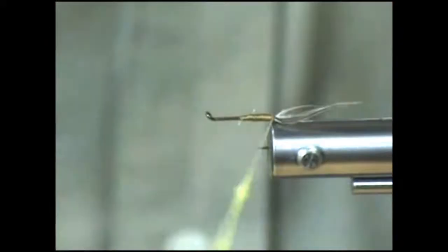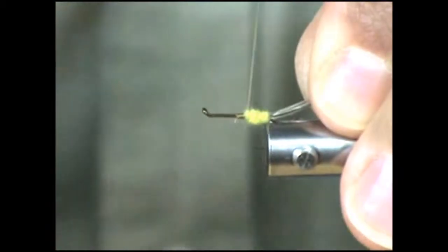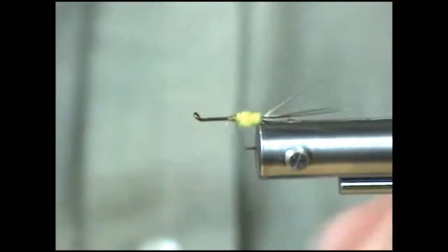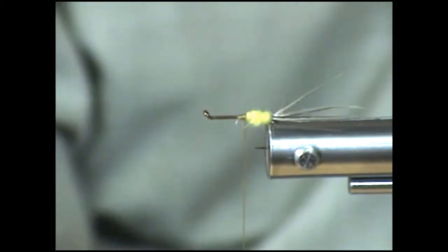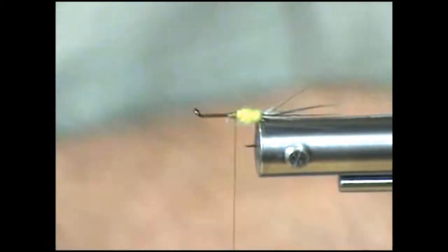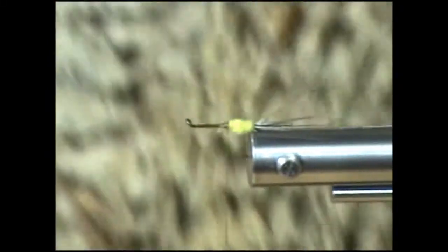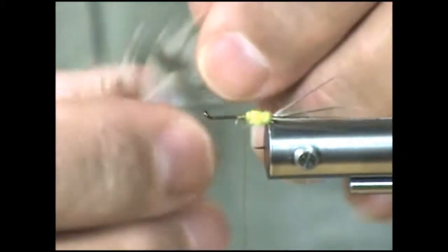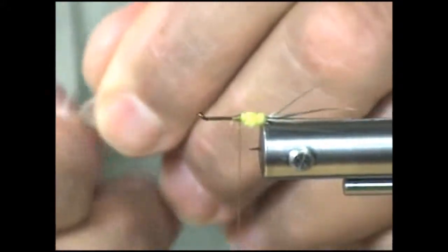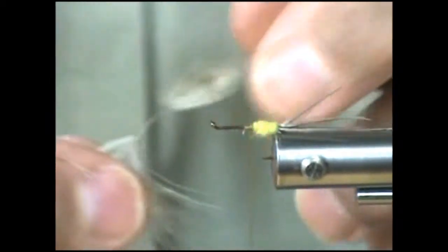Push that forward a little bit, go ahead and start to wrap that yellow dubbing forward. Next thing I'm going to do is take a couple of feathers from the 4B rooster cape, which looks like this. It's a nice cape feathers. Measure this up a little bit and pull off some of the fibers.